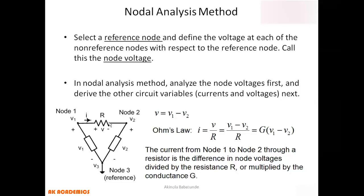Here is a circuit given to us. You can see it has several parameters — this resistor here, another resistor here, and another resistor. At this particular point connected to the ground, this is our reference node. This is Node 1, so V1 is the node voltage at Node 1. This is Node 2, and the voltage at Node 2 becomes V2. The polarities are defined — positive to negative, positive to negative.